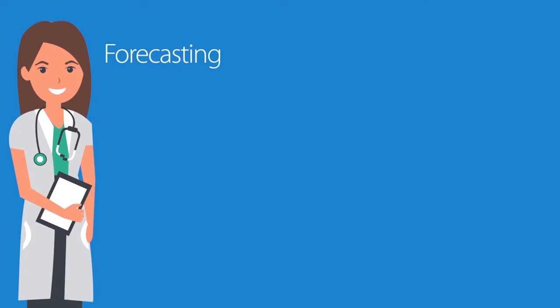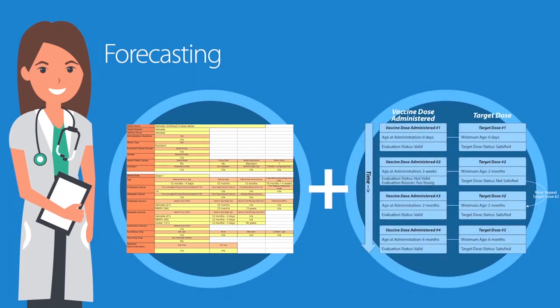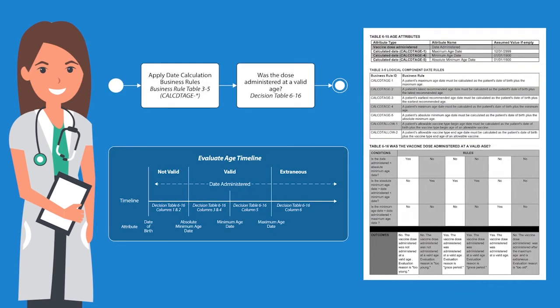In order to forecast the earliest and recommended due dates for each target dose, data are collected from the supporting data components that contain the ACIP-recommended vaccine dose standards, and the evaluated patient series or the output from evaluation. The process model, timelines, decision tables, business rules, and attribute tables work together to generate an evaluated history and forecast.